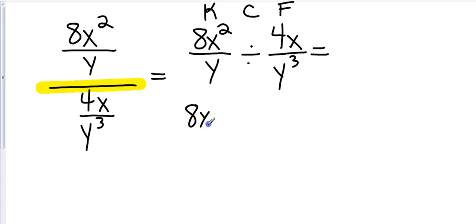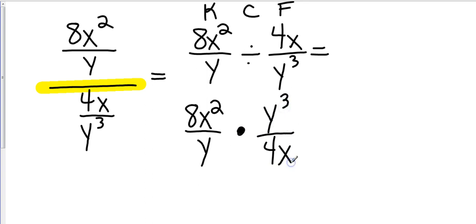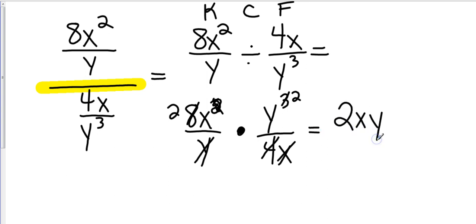So keep the 8x squared over y, change the division to multiplication, and flip the second term — so now it's y cubed over 4x. We want to take care of our numbers first: 4 goes into 8 twice. Now let's look at the variables. This x will take out one of those x's, leaving x to the first power. This y will take out one of those, leaving y to the second power. On the bottom, everything is canceled out, so it's just 1. And I have 2xy squared.